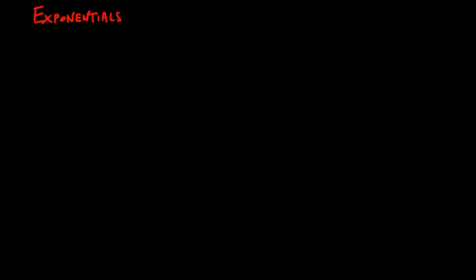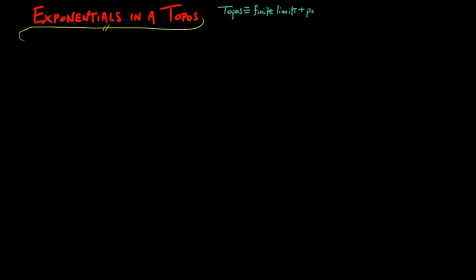Last time we showed that all exponents with the sub-object classifier as the base object exist in a topos. In this video we construct exponents for any two objects in a topos. Recall that a topos is a category with finite limits and power objects, which we showed is equivalent to a category with finite limits and a baseable sub-object classifier.